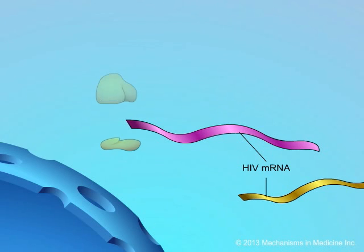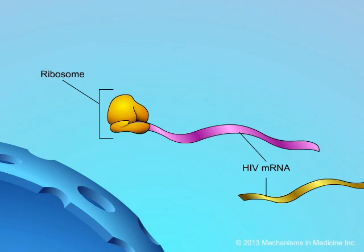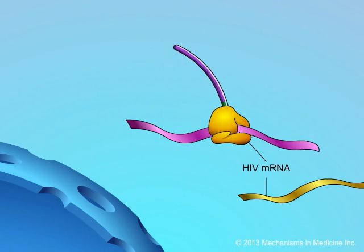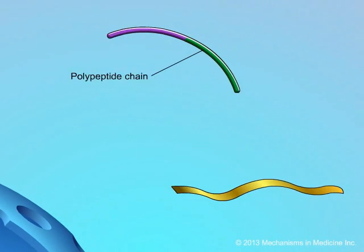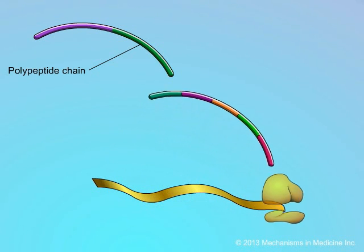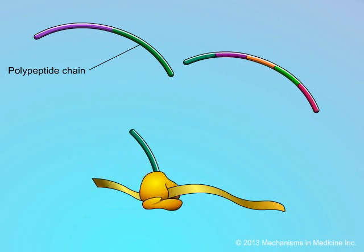A host cell ribosome normally moves along a viral messenger RNA strand and translates it into viral proteins. These proteins include enzymes that are themselves synthesized in the form of long polypeptide chains.